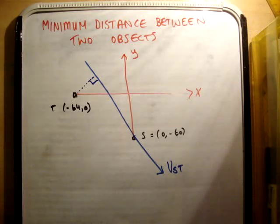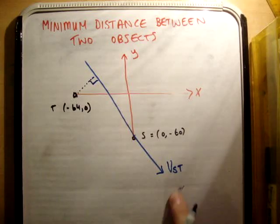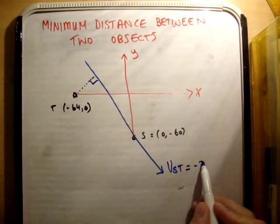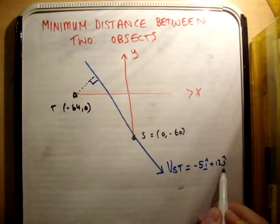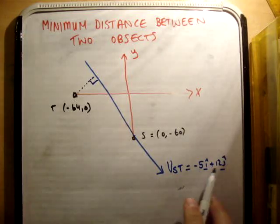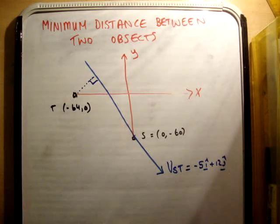And I'm just going to call it VST. Now, what we're asked to do is find the minimum distance between the two objects. And the definition of the minimum distance is when there's a 90 degree angle between the two objects. Now, the easiest way to do this is to say T is stationary and minimize the distance between T and the line of the vector velocity, VST.